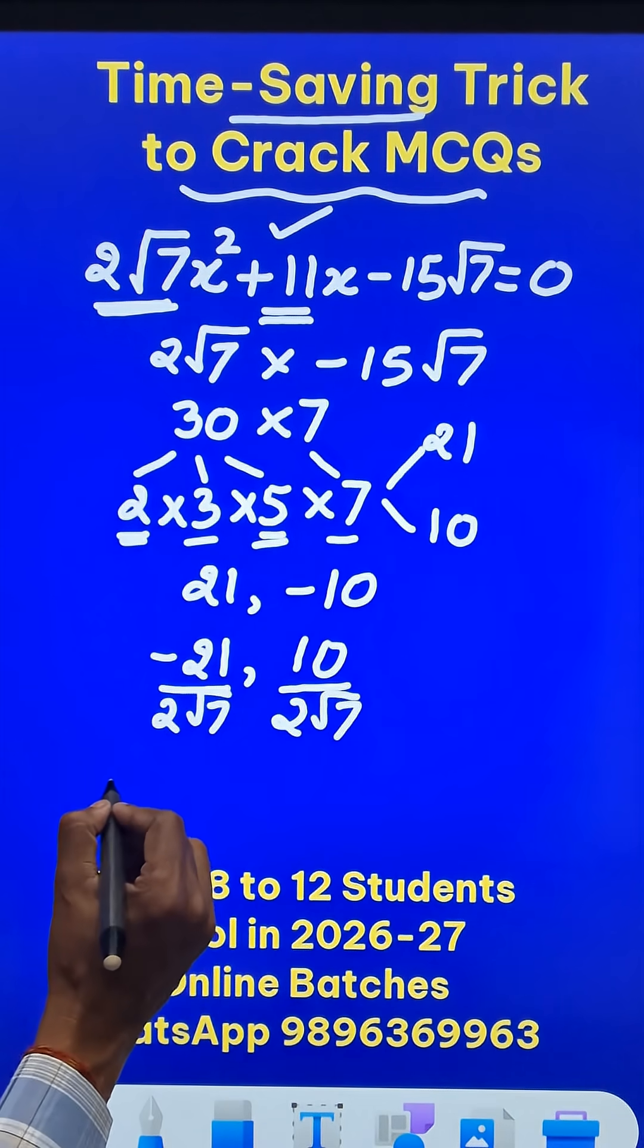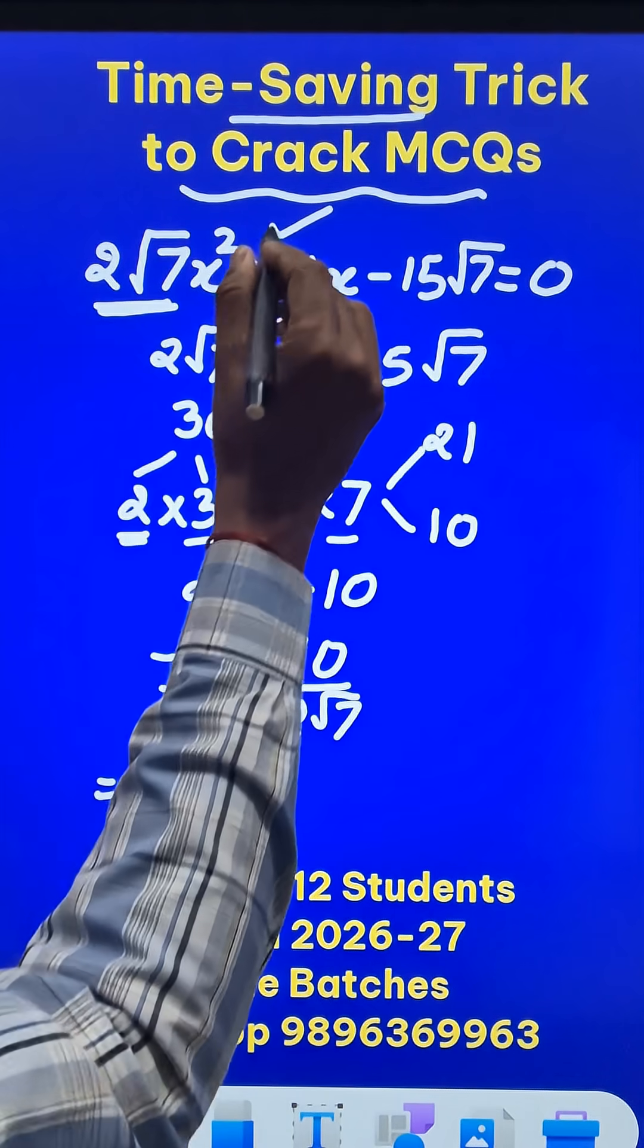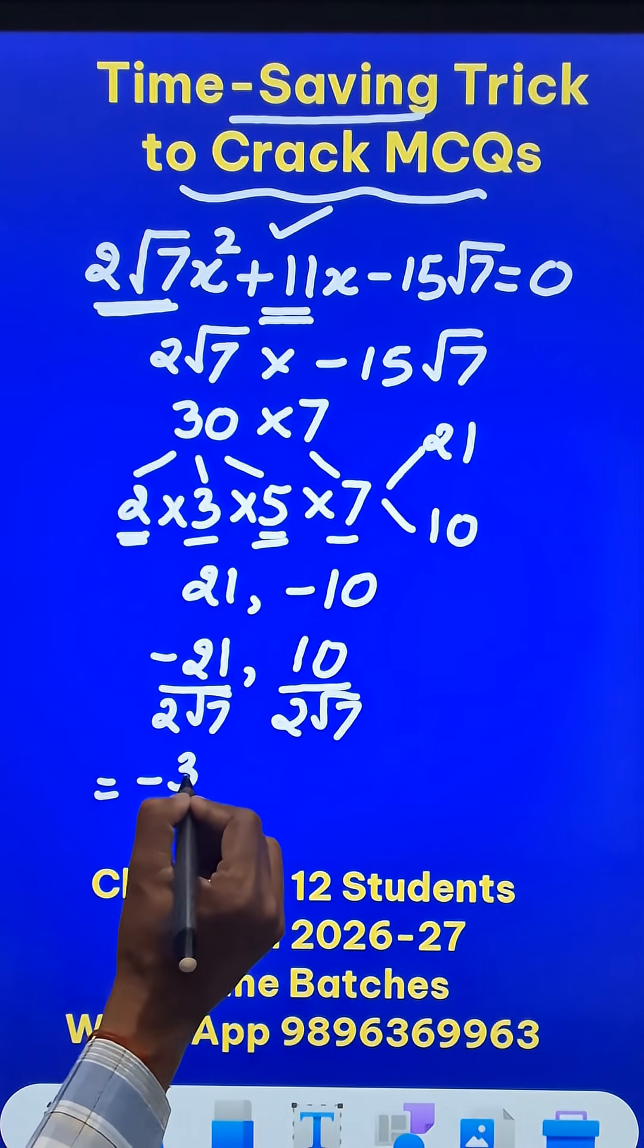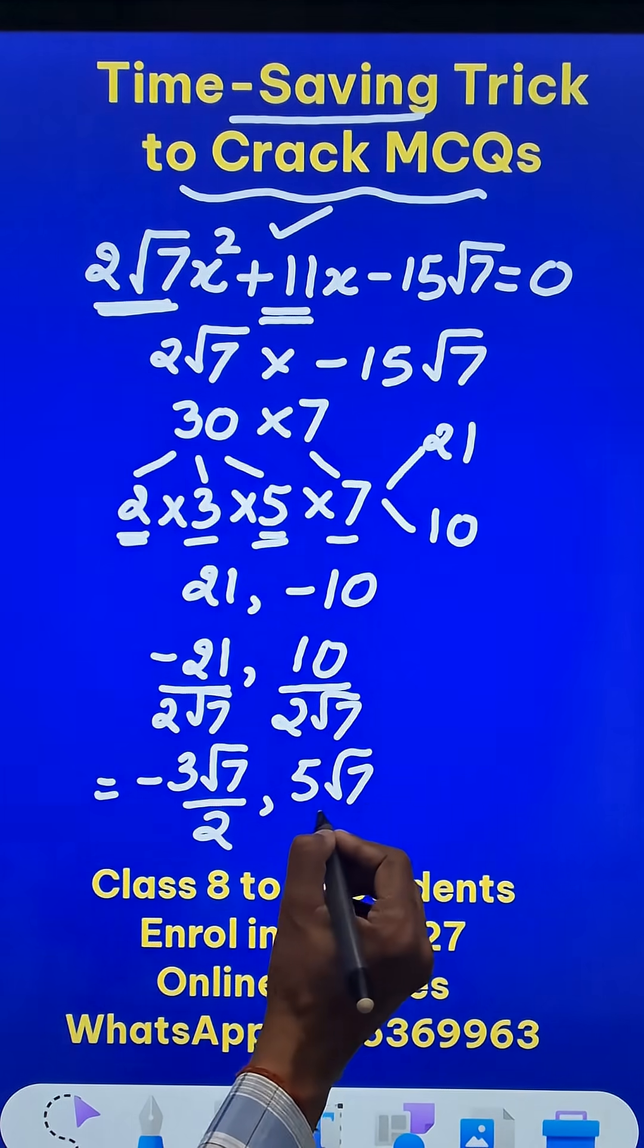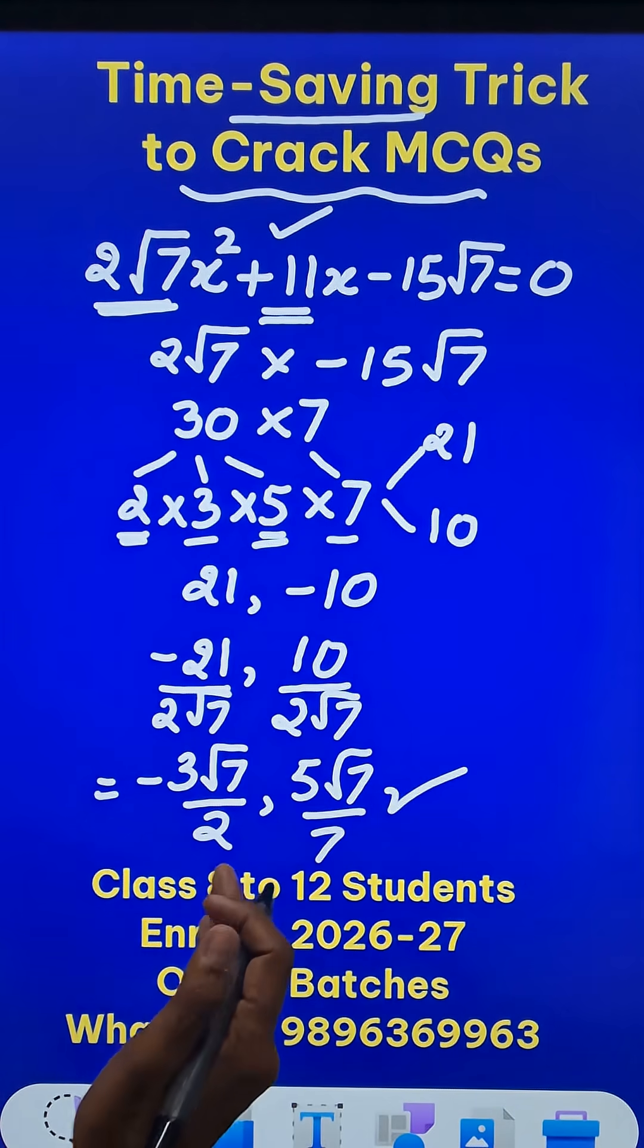Rationalize them, you will get the simplified form of these roots of this quadratic equation, which is negative 3√7 upon 2, I rationalize by √7, and then 5√7 upon 7. Now check using the traditional approach.